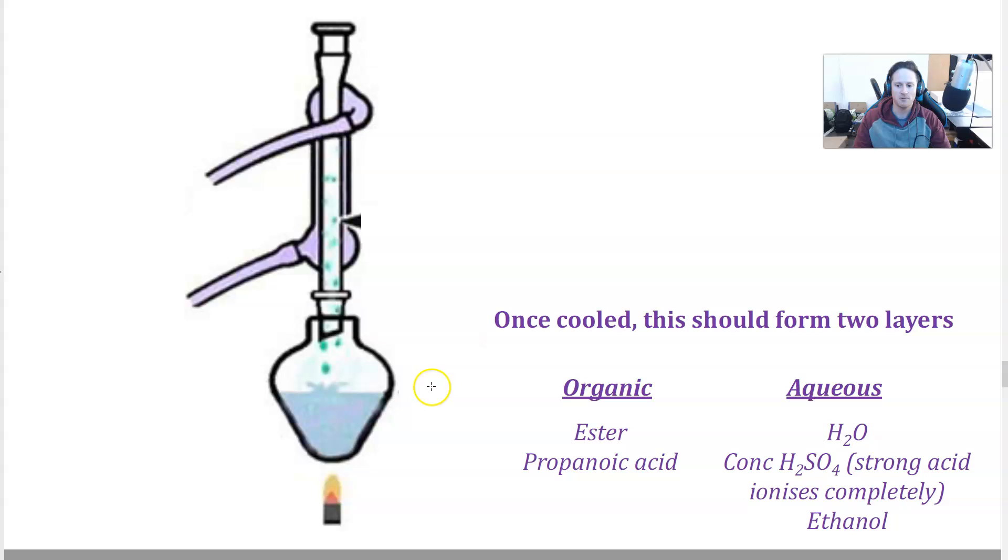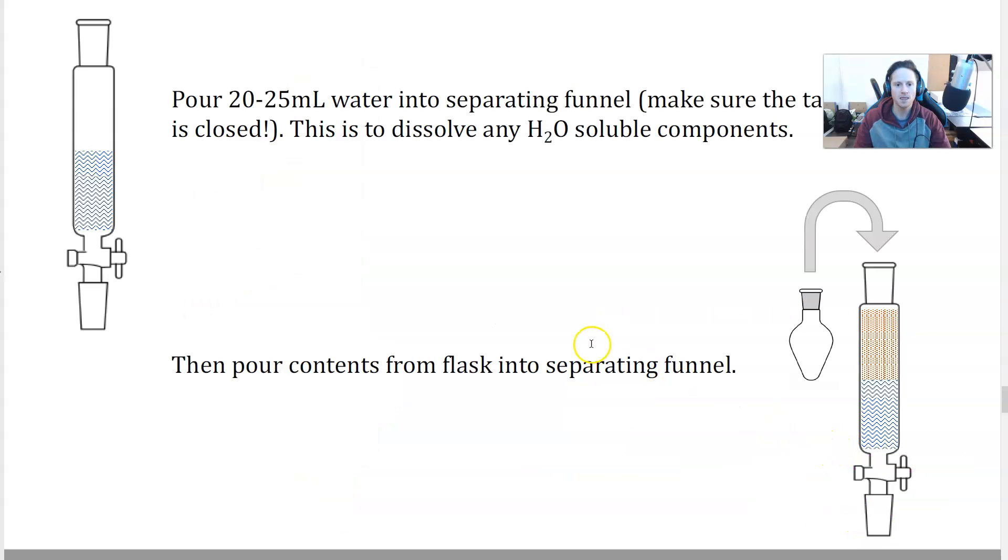Once the reflux is finished and that reaction cools down, you're going to get two separate layers. The organic layer is going to contain ester and propanoic acid, so organic is non-polar. Our aqueous layer is going to be water, sulfuric acid, and ethanol, which is a short chain alcohol. Polar mixes with water. So now what you want to do is pour some water into the separating funnel, this piece of glassware here, to dissolve more water-soluble components, and also to see what layer is the aqueous layer. The aqueous layer in this example is more dense, so it's going to be in the bottom.